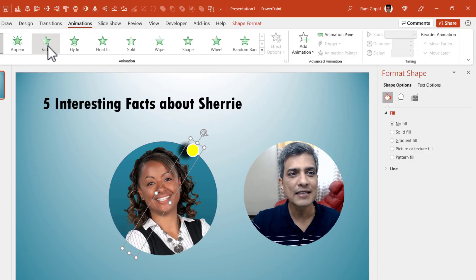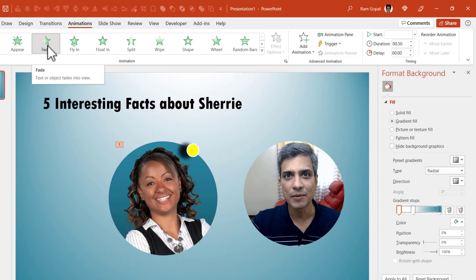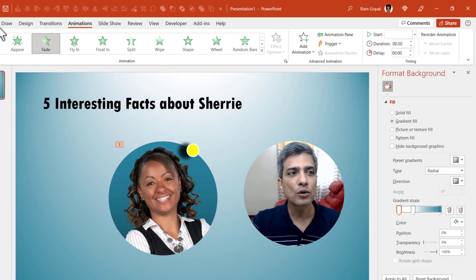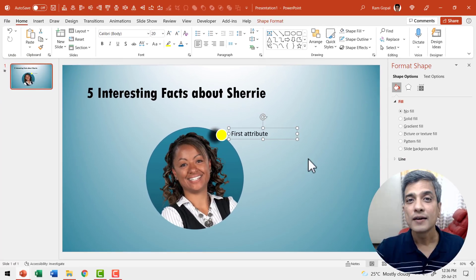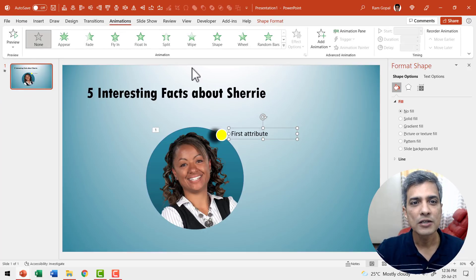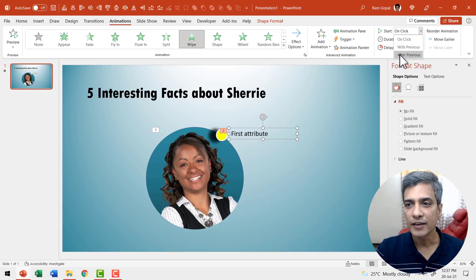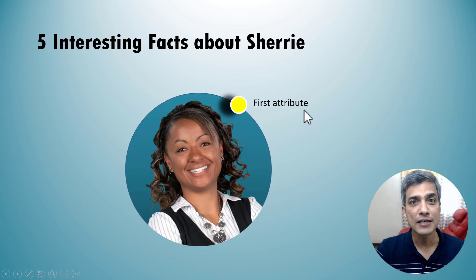We are going to introduce this onto the scene with a simple fade animation. Go to animations and say fade. Remember, we've selected all five elements together and applied this entrance animation. Once it enters the scene, we write some text that talks about the first attribute. Go to Insert, pick the text box, and write the first comment. Animate it with a wipe from left, after previous. In slide show, the marker is introduced and the first attribute is shown.